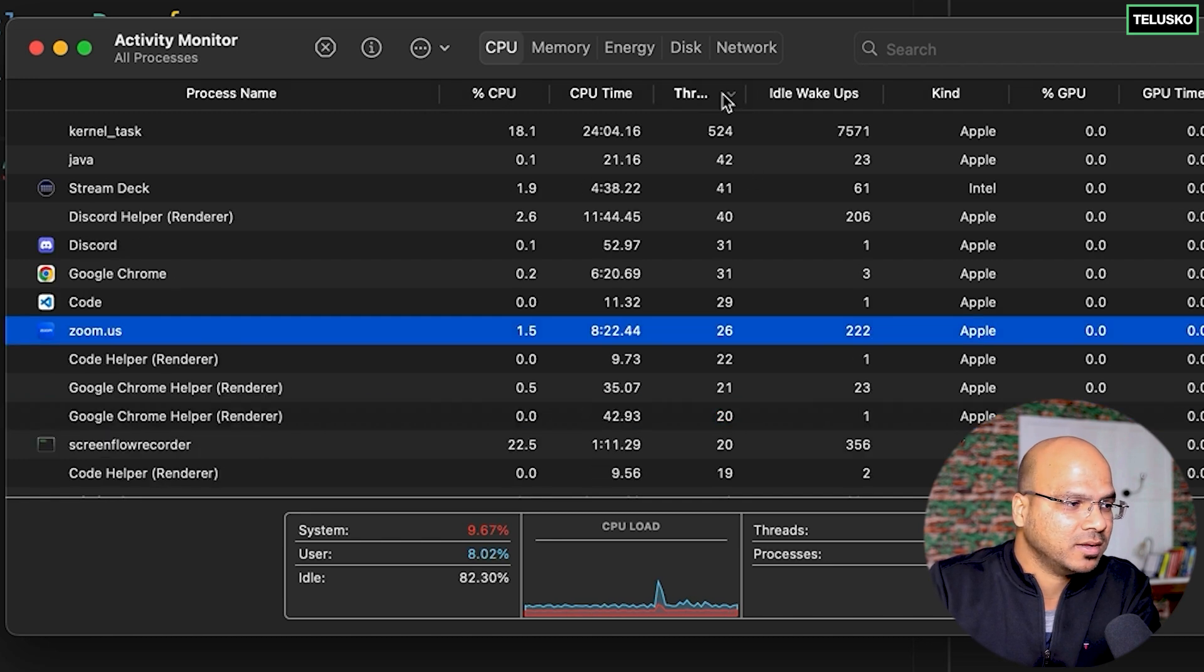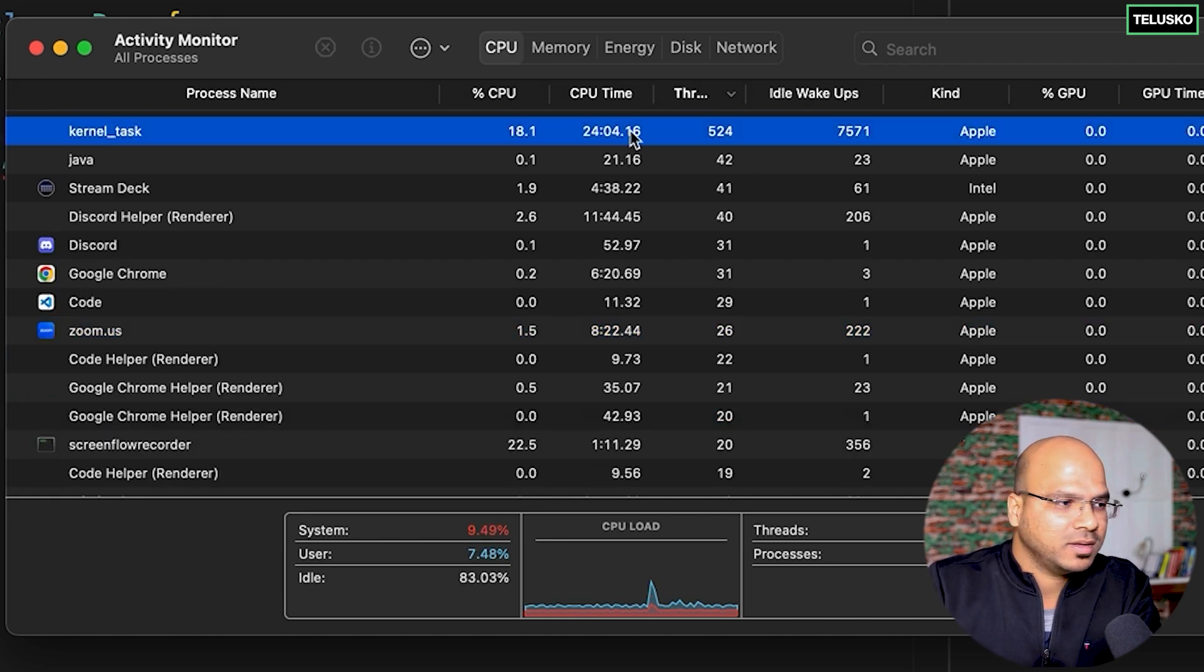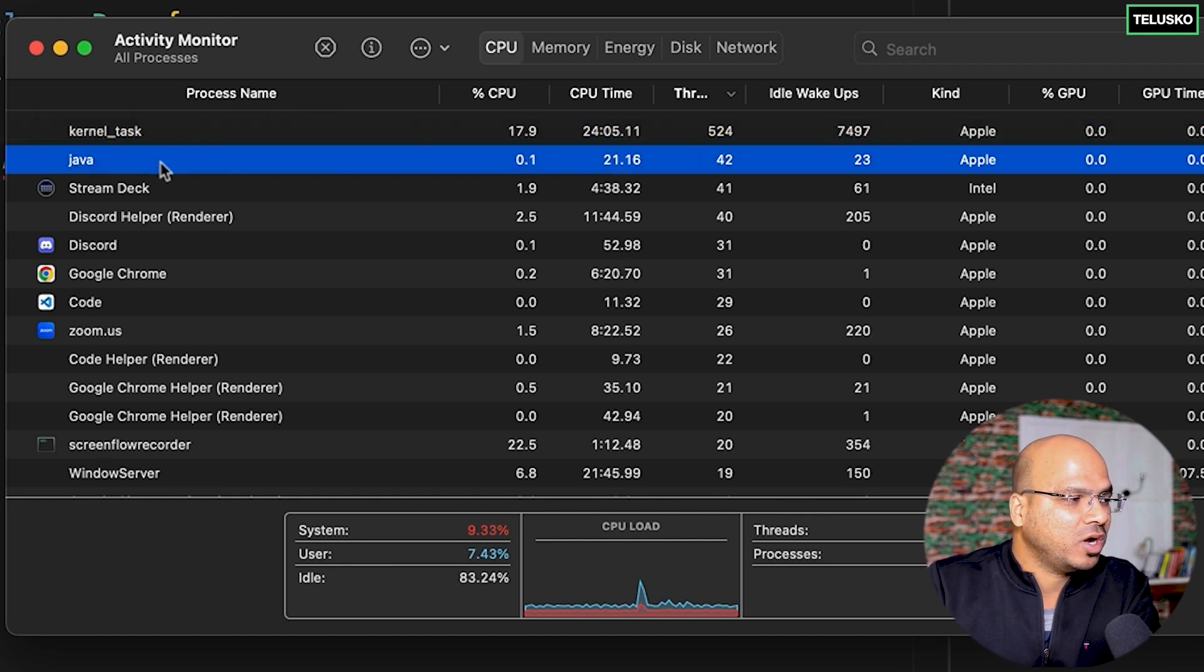And if you can see, we have threads there. So the kernel is consuming the highest number of threads: 524. Then we got Java because we are running Java behind the scene, so Java is using 42 threads.